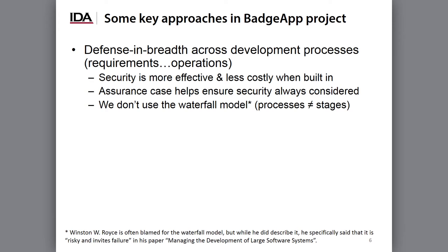I do want to make one thing clear. I talked about requirements through operations, but in fact we don't use a waterfall process. The word 'process' is not at all the same as the word 'stage' — this is a common confusion in the software development world. When we talk about process, we're talking about activities that take inputs and produce outputs. Stages, on the other hand, are periods of time. It's a common mistake to try to apply a very strict waterfall on developing software, and in fact this is an extremely risky approach — even identified by Winston Royce as extremely risky.